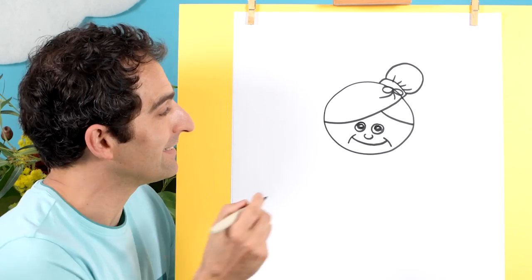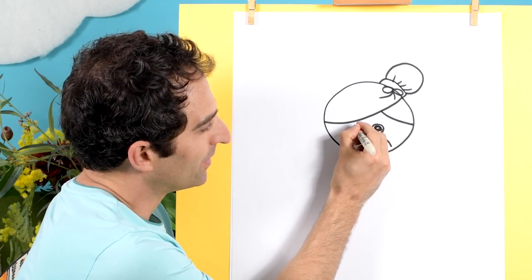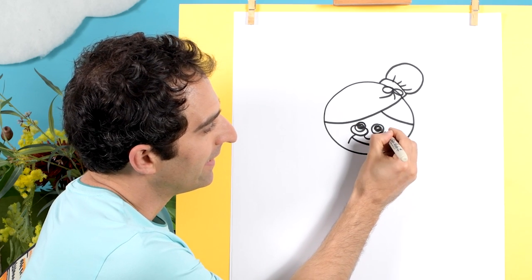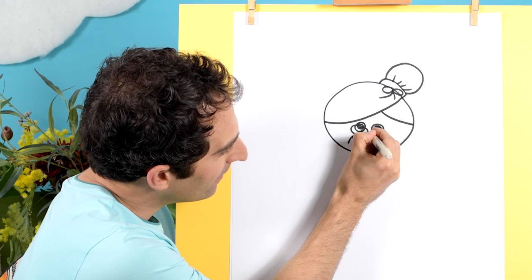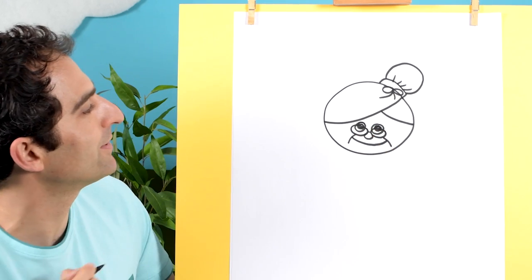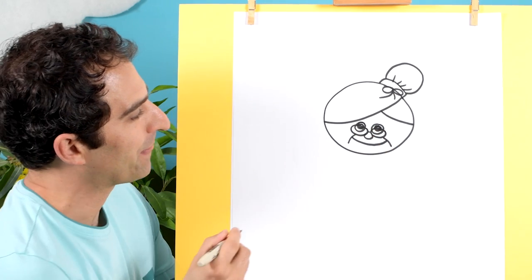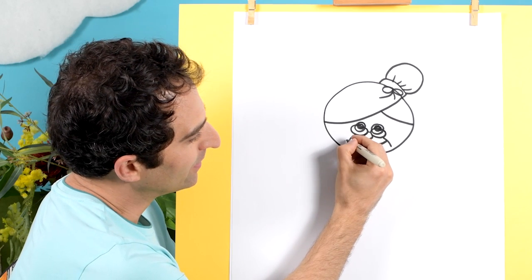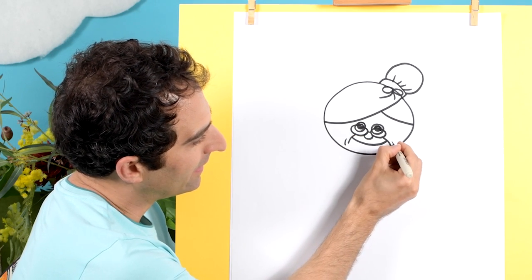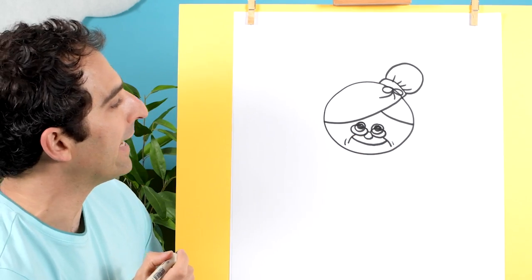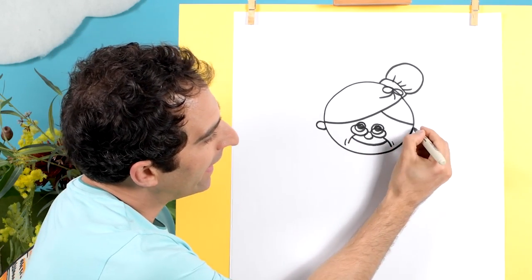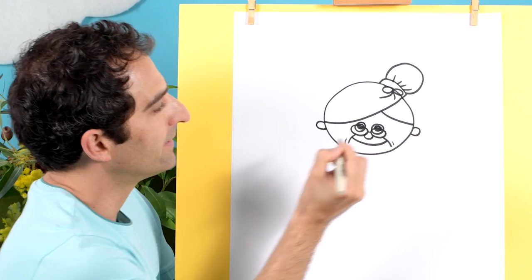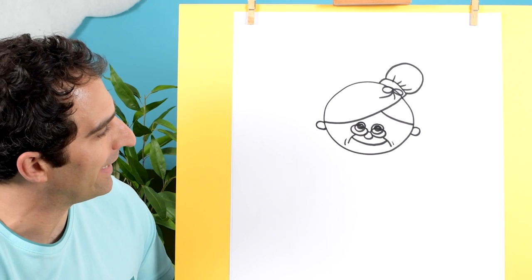Now how about some little glasses. Let's draw a circle that goes over the eye like that. And another one like that. And then it can have a little line over the nose. There we go. Now we can add a little line here and a little line there. And some ears. Let's draw a little ear here and one here. That's great.